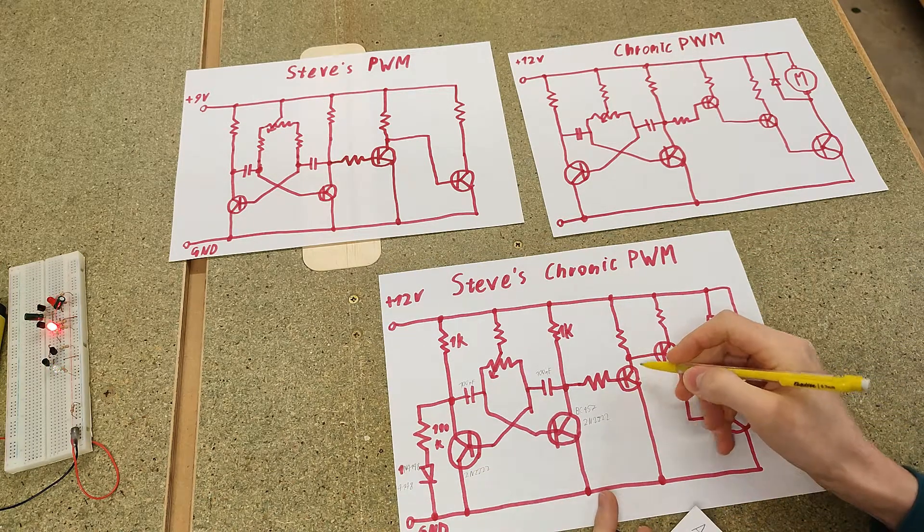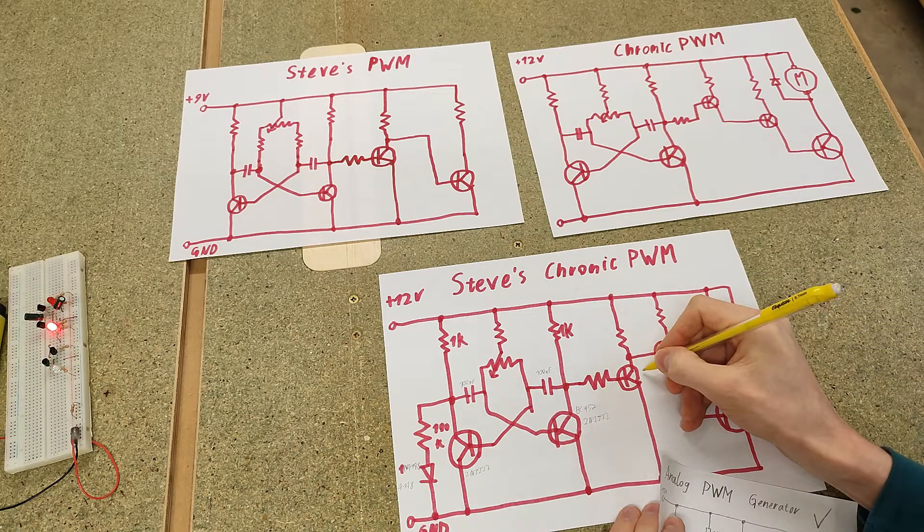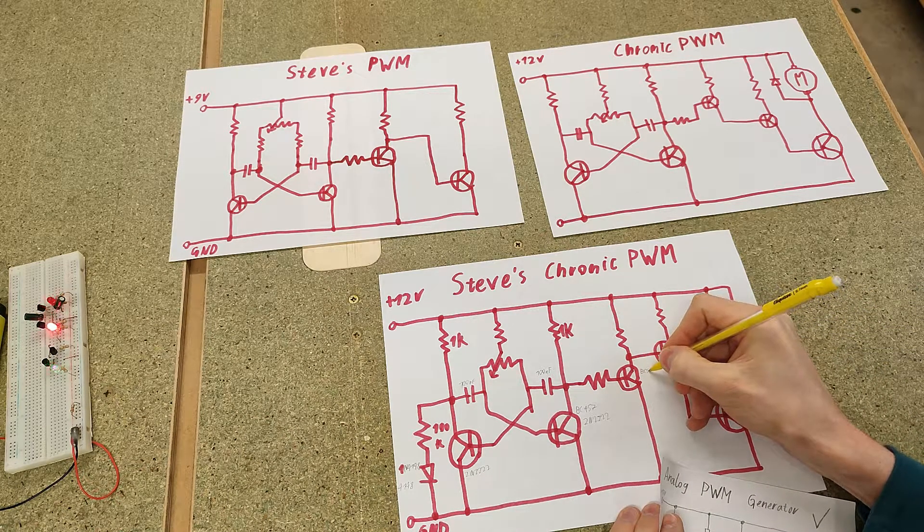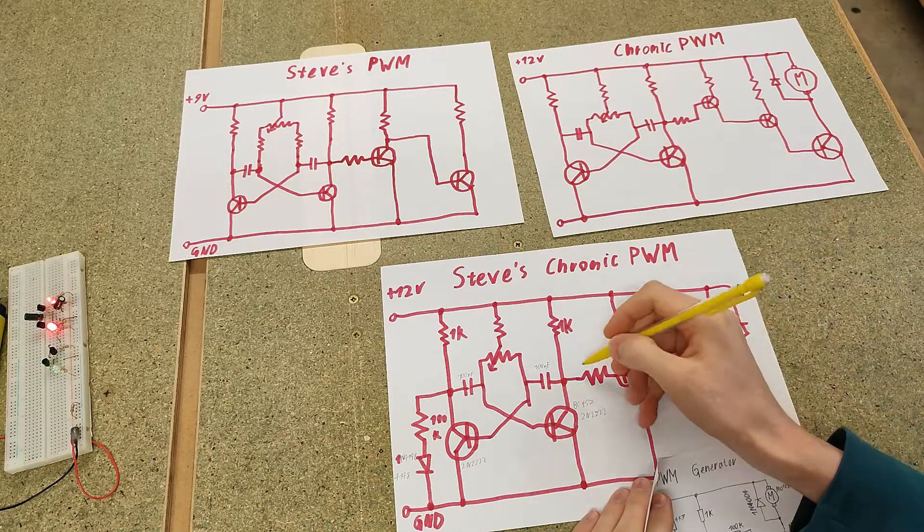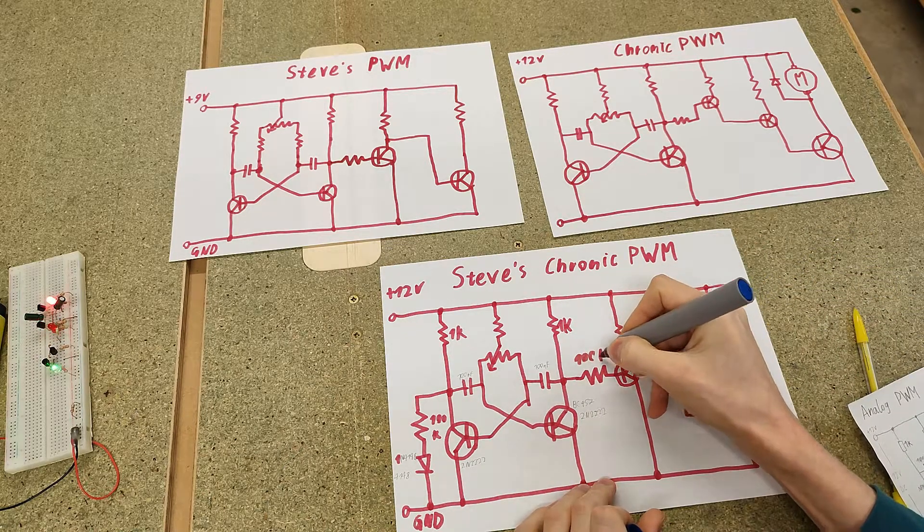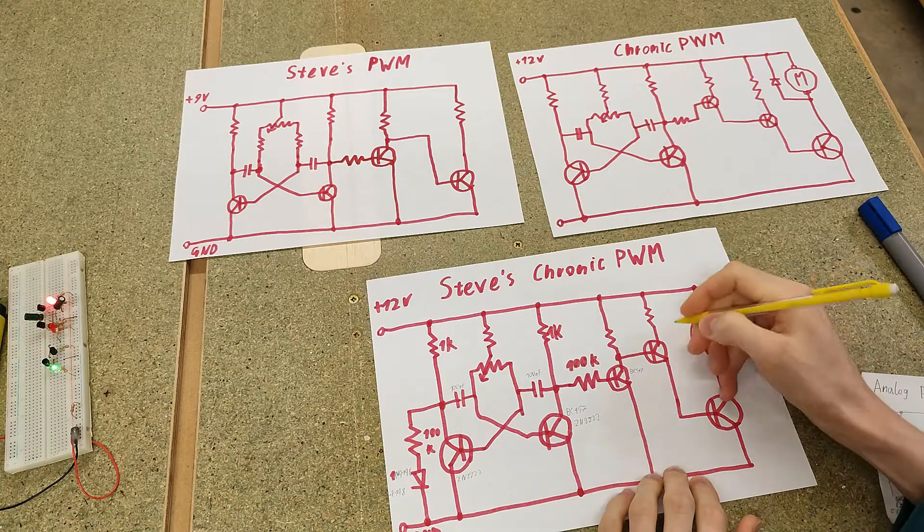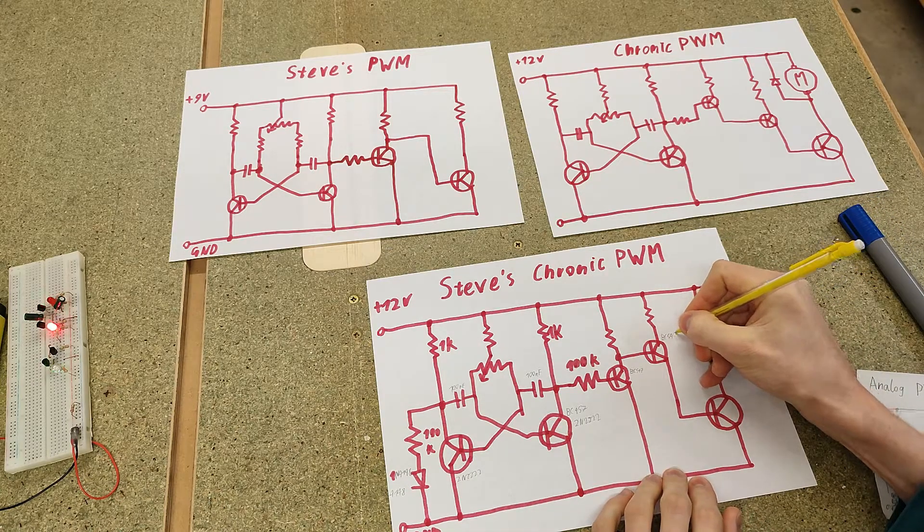Now this transistor, I'm also going to go with a BC547. Then we have 100k. Here, another BC547.